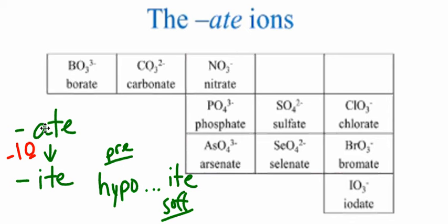Carbonite would be CO2^2-. Remember the charge doesn't change. Now if I'm going from -ite to hypo-ite, I would subtract yet another one more oxygen. So if I was to go from -ate to hypo-ite, that would be removing two oxygens.